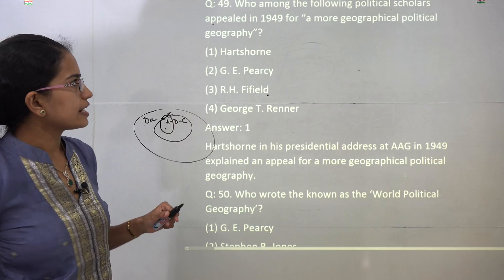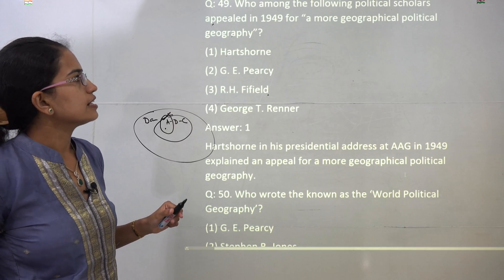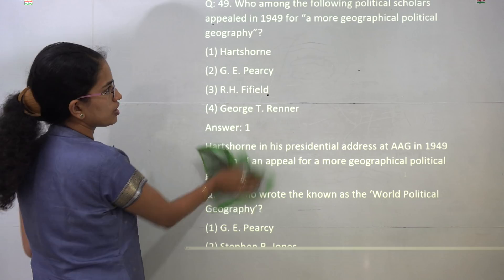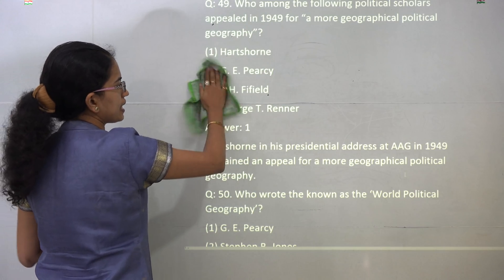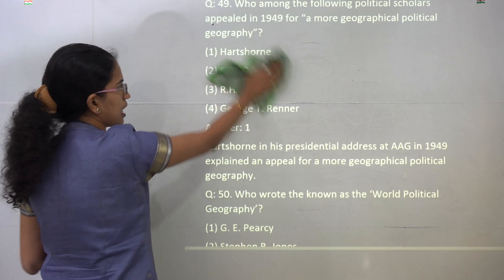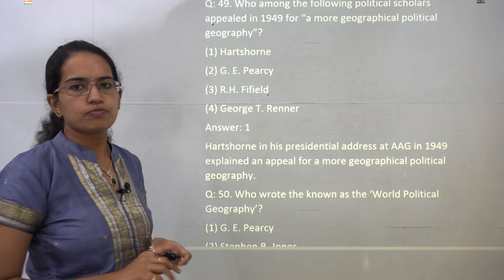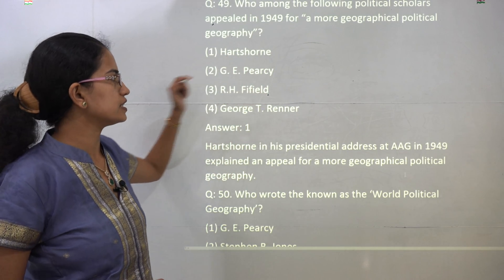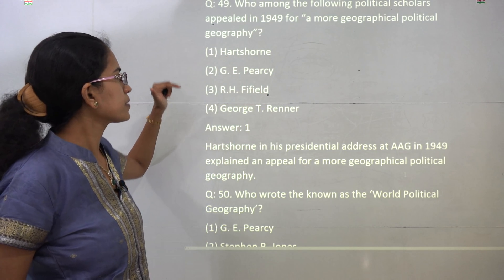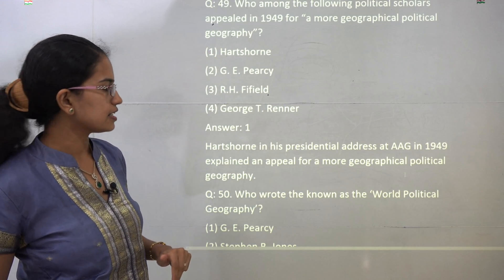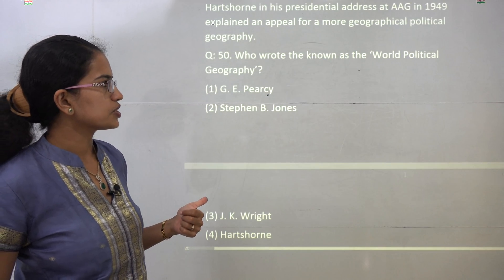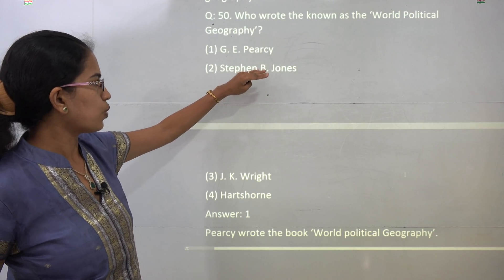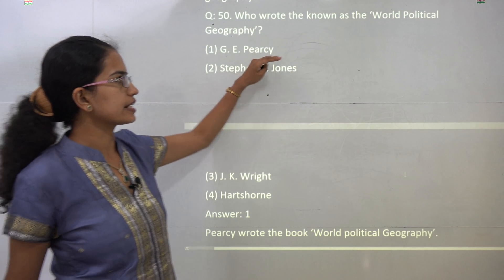In 1949, which political geographer appealed for a more geographical political geography? The correct answer is Hartshorne, who in the presidential address of the American Association of Geographers made this statement — so option 1 is the correct answer. The last question: the book World Political Geography was written by PRC, so option 1 is the correct answer.